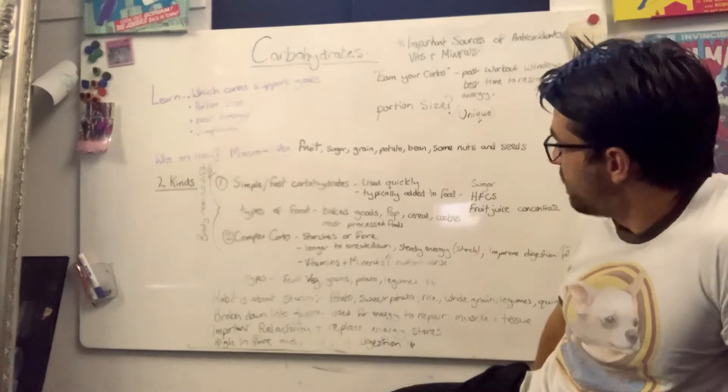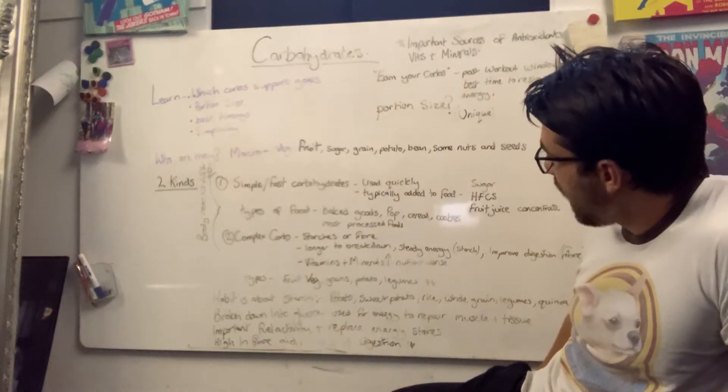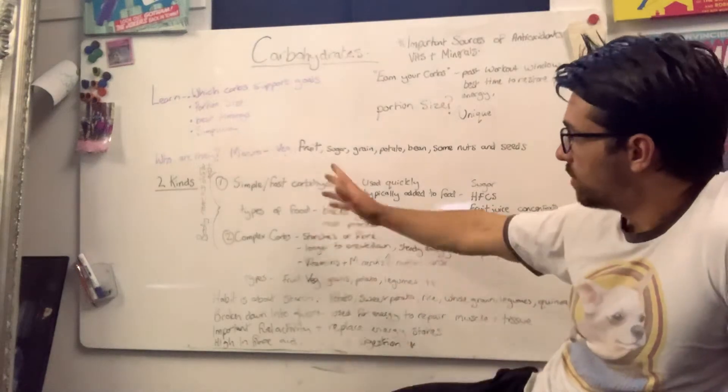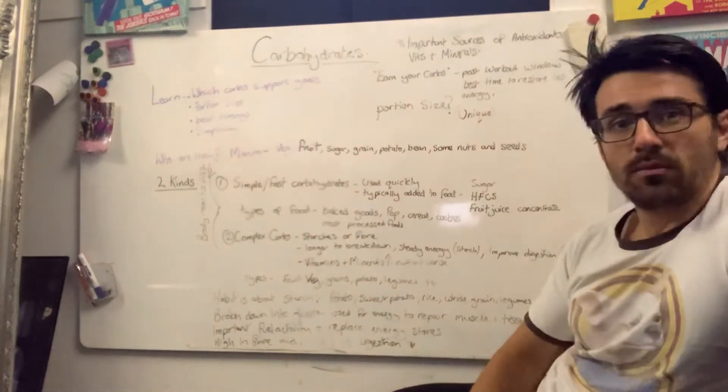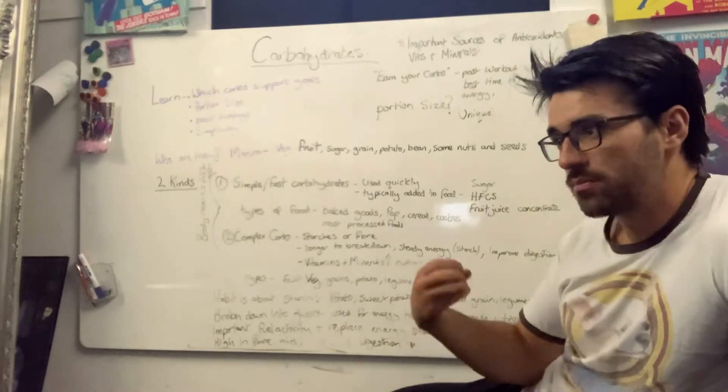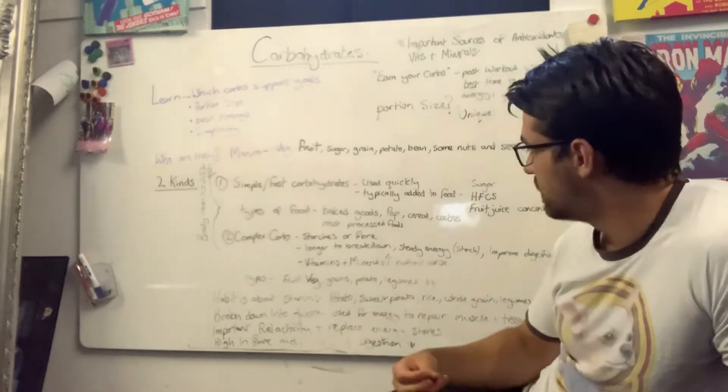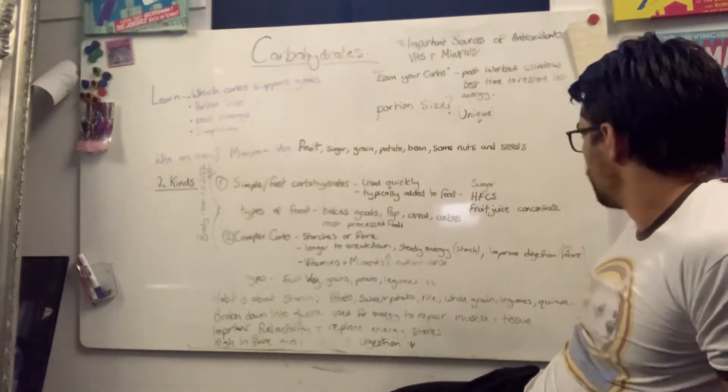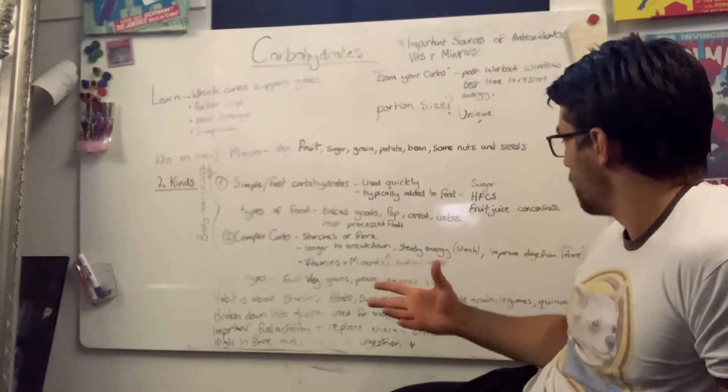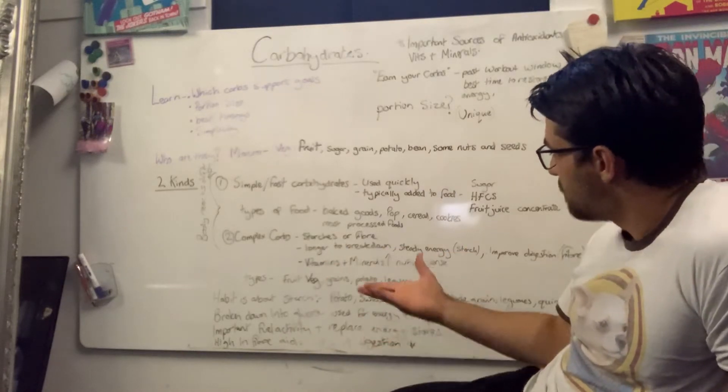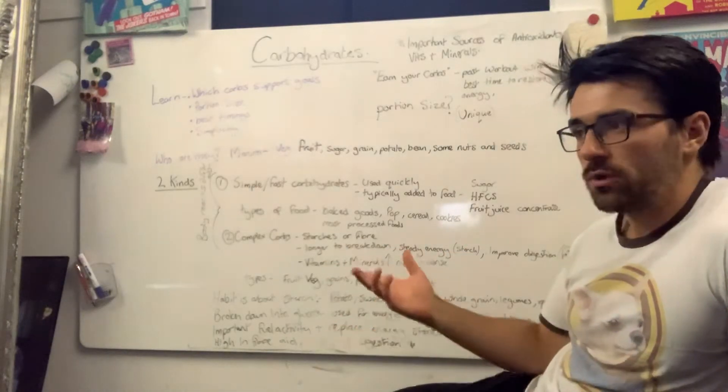Type number two, we've got complex carbohydrates. And these are starches or fibrous carbohydrates. Completely the opposite. They are longer to break down. They provide steady energy. Because of the fibre, it's more difficult for the body to break it down, so it feeds that energy into the system and doesn't hit your liver as hard. It improves digestion and they contain vitamins and minerals, and they're generally more nutrient-dense.